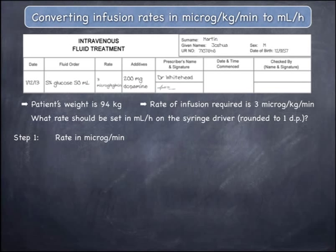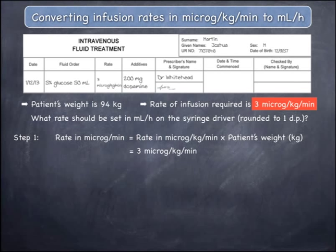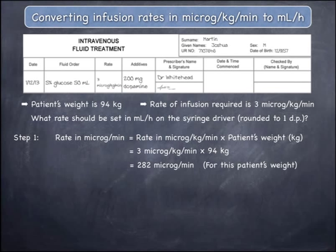First, change the rate in micrograms per kilogram per minute to a rate in micrograms per minute. This can be done by multiplying the rate in micrograms per kilogram per minute by the patient's weight: 3 micrograms per kilogram per minute multiplied by 94 kilograms, giving 282 micrograms per minute.